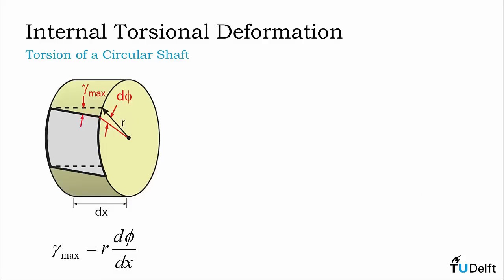In the previous slide, we examined the shear deformation on the surface of a segment of our shaft. Let's rename the shear strain at this location to gamma max and take a look at what is happening inside the segment at an arbitrary radius rho.